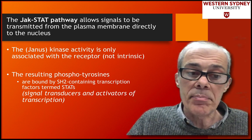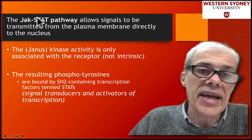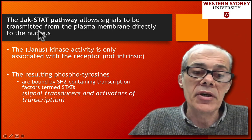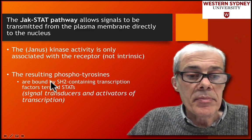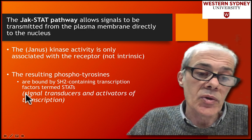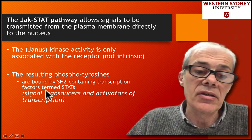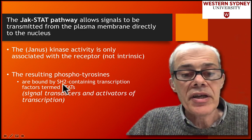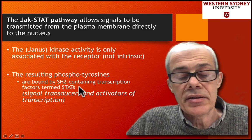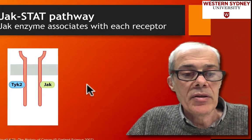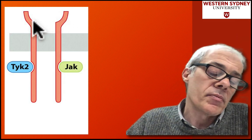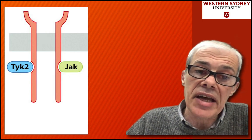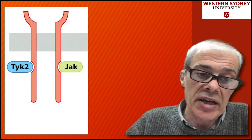That then leads to the binding of something, and that something is the STATs. It's a very simple pathway — the activated receptor binds a transcription factor. STAT stands for Signal Transducer and Activator of Transcription. These STAT proteins are transcription factors, and they simply bind to the receptor. Here's our receptor — it's not a receptor tyrosine kinase because it doesn't have an intrinsic tyrosine kinase within the chain.